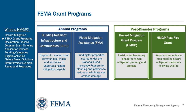These are competitive grant programs that provide funding to state, local, tribal, and territorial governments on an annual basis. On the right-hand side, we have the Post-Disaster Programs, which are the programs we will focus on in these videos. This includes HMGP and HMGP Post-Fire Grant programs. These programs are intended to provide funding to state, local, tribal, and territorial governments after a disaster so they can rebuild in a way that reduces future disaster losses to their communities.